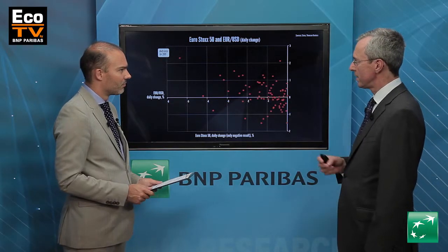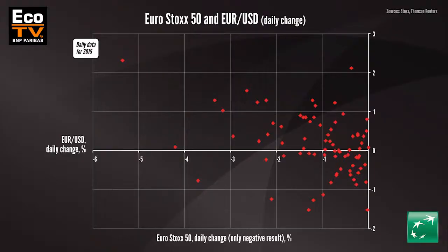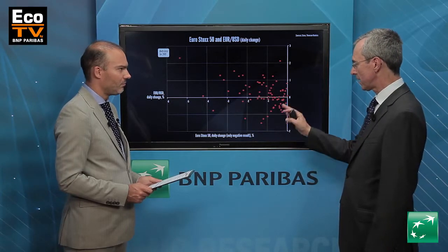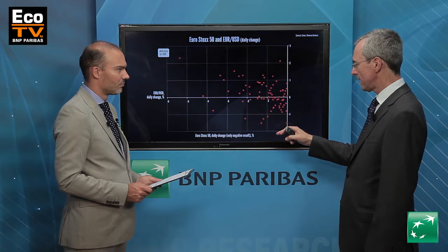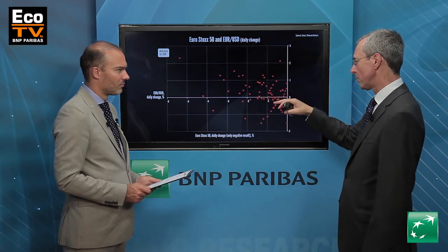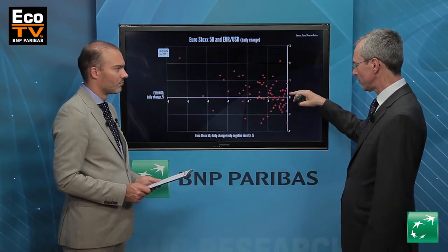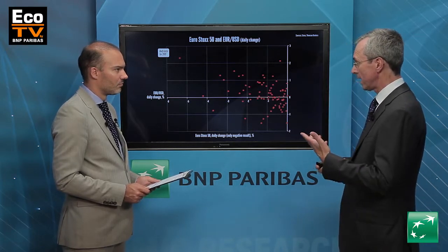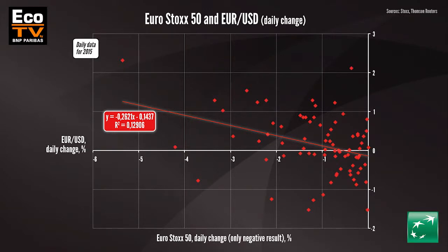Indeed, this is the short term experience, starting in 2015. What strikes is that you have quite a significant number of observations with a decline in the stock market. But you see that on many occasions, there is a strengthening of the EUR against the dollar, which is shown when the dot is above the zero line. And actually the regression line has also changed. So what is the explanation of this recent phenomenon?